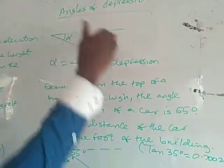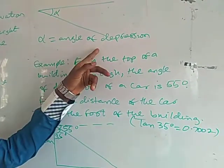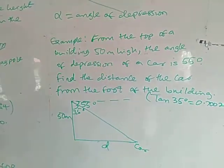As you can see in the diagram, this is the horizontal plane, and this is the depression angle coming down. Any angle below the horizontal plane is the angle of depression.